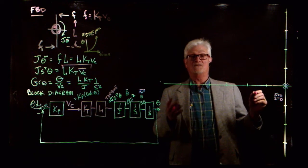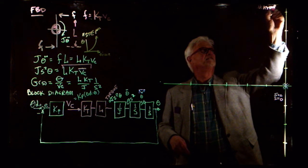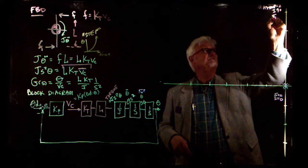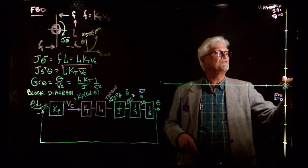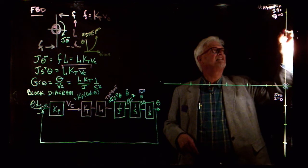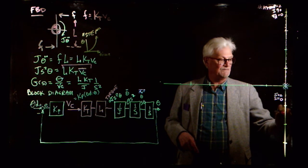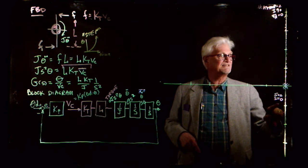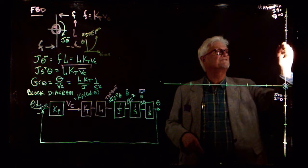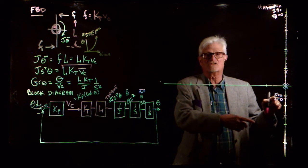We can draw a root locus for this system. There are two poles at S equals zero, so the number of asymptotes is two. The angles are plus or minus 90 degrees, and the sigma asymptote is at zero. As I make K_P bigger and bigger, the roots of the characteristic equation move from two at zero toward these asymptotes.